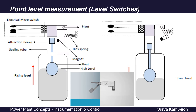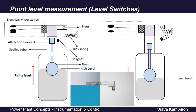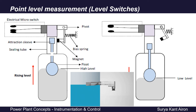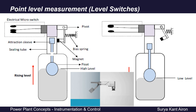A level switch is also similar — when the level reaches that set value, only then the switch acts and closes the contact to complete the circuit. The switch can be configured to act on going higher than a fixed set point, in which case we call it a high level switch, or it can be configured to act when lower than a fixed set point, called a low level switch.